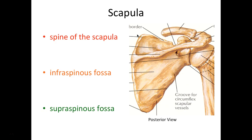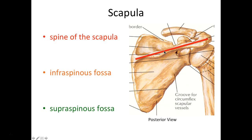Now we're looking at the scapula in a posterior view. If you feel your shoulder blade, a little on the upper third, you're going to feel this spine of the scapula all along in here. And that really divides out two depressions.